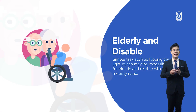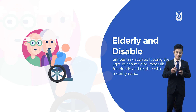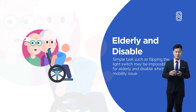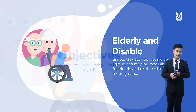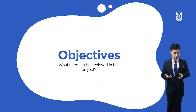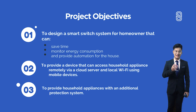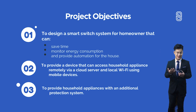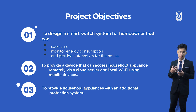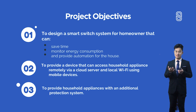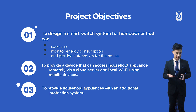The last problem is the elderly and disabled. Simple tasks such as flipping the light switch may be impossible for elderly and disabled people who have mobility issues. Moving to the objectives — what needs to be achieved in this project? First, I wanted to design a switch system for homeowners that can save time, monitor energy consumption, and provide automation to the house. Second, I wanted to provide a device that can access household appliances remotely via a cloud server and local Wi-Fi using a mobile device.